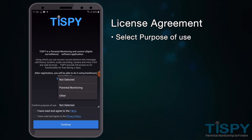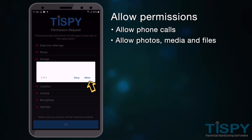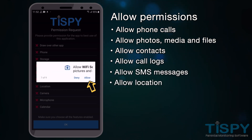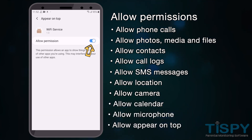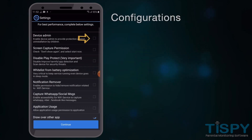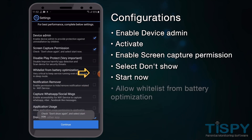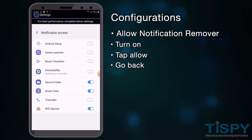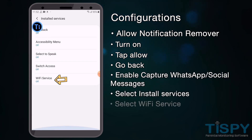Accept the license agreement, select the purpose of use, and continue. Remember that accepting all permissions is crucial — allow all permissions. In Configurations, enable Device Admin and Screen Capture Permission. Some settings may vary from device to device, so please refer carefully to our installation page; we have given the link in the description. Enable Accessibility to capture WhatsApp and other social media messages, and do all the required settings before continuing.